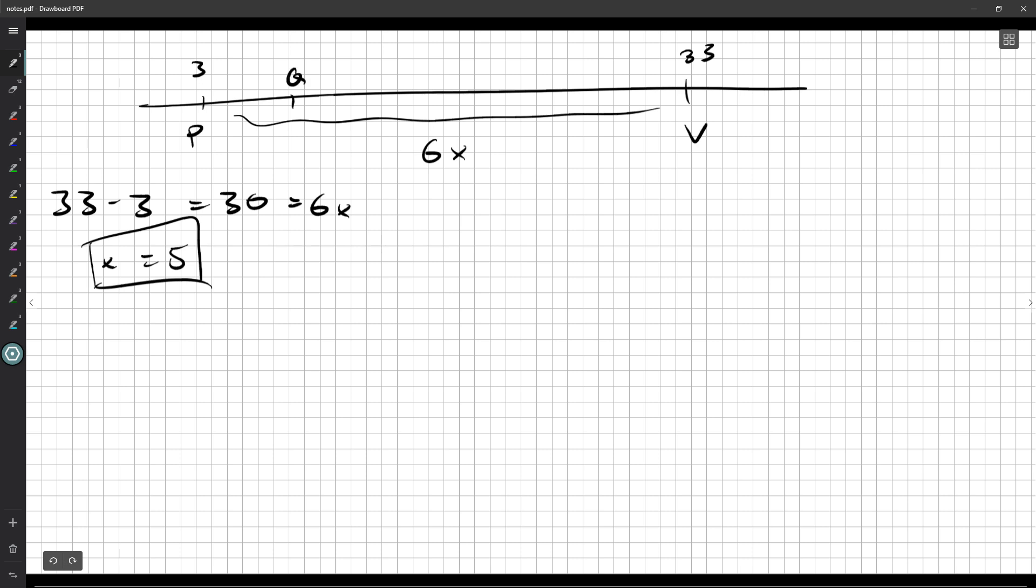So X should be 5. So Q is 5 over from 3, R is 5 over from Q, 5, 5, and another 5 for U. Okay, and then between U and V, another 5.